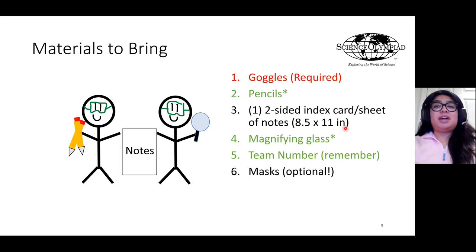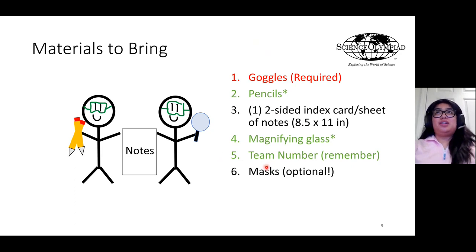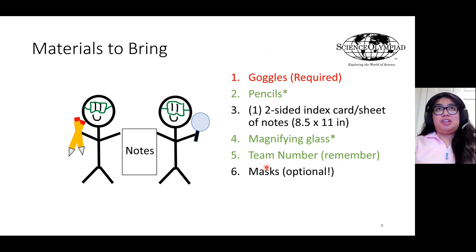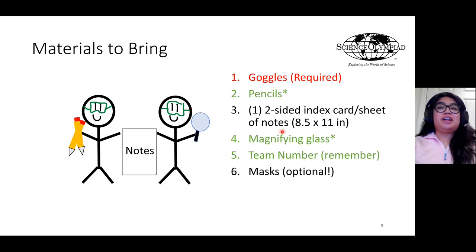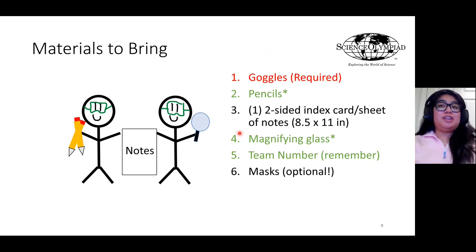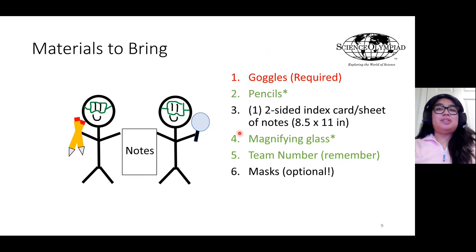Make sure your team has a magnifying glass, and that they remember their team number — that will help them find their specific exam materials, since the zip grades will be pre-labeled with their team number and school name. Masks are optional now. In terms of goggles, pencils, and magnifying glasses, it is mostly up to students and event coaches to make sure they have these materials. I may have extras on hand, but it's not always guaranteed.